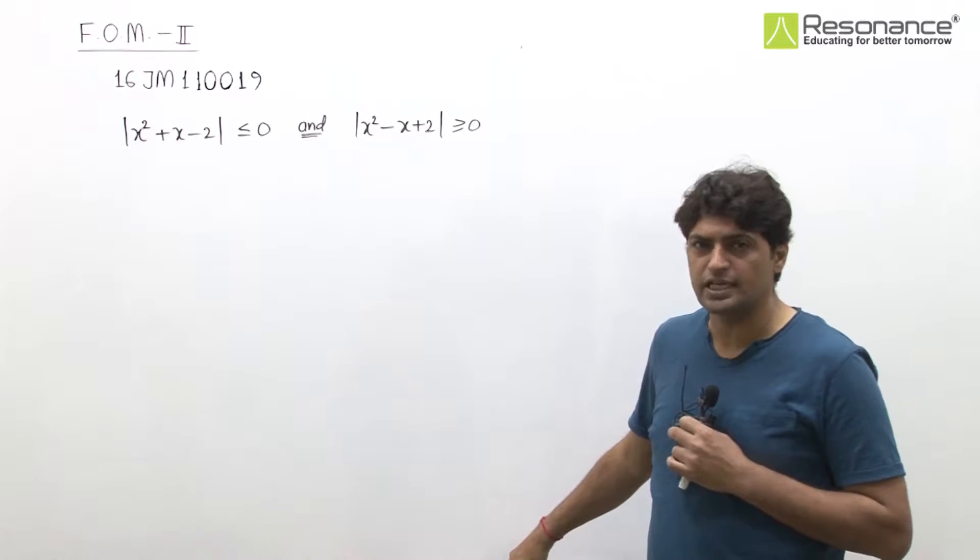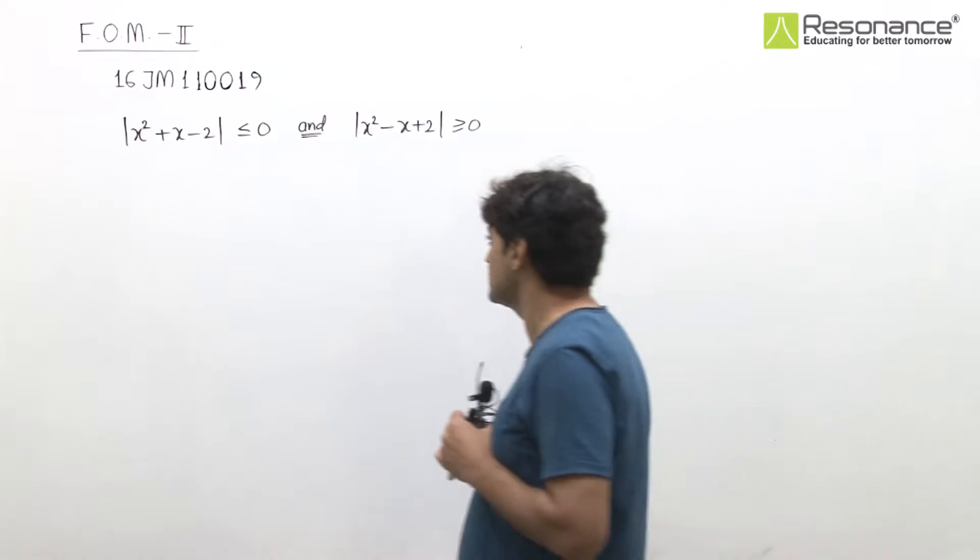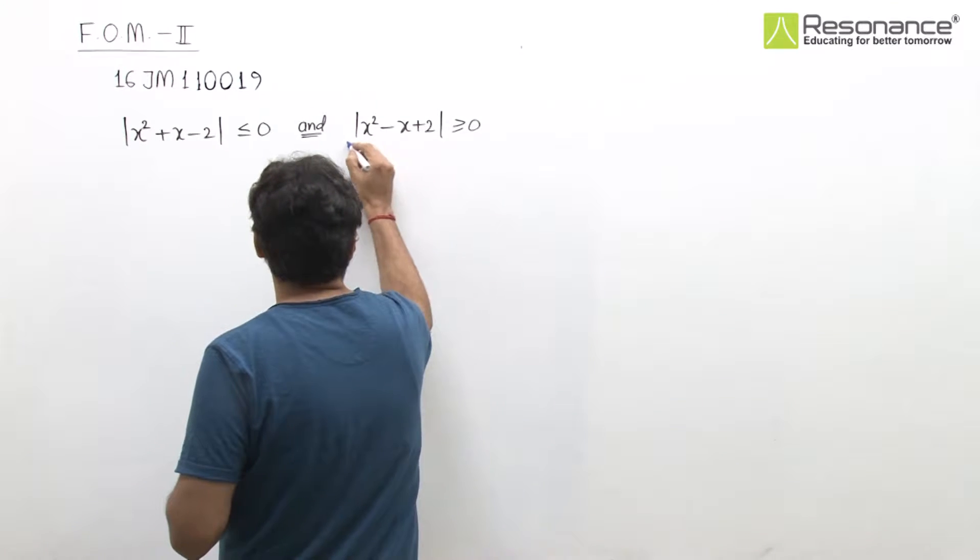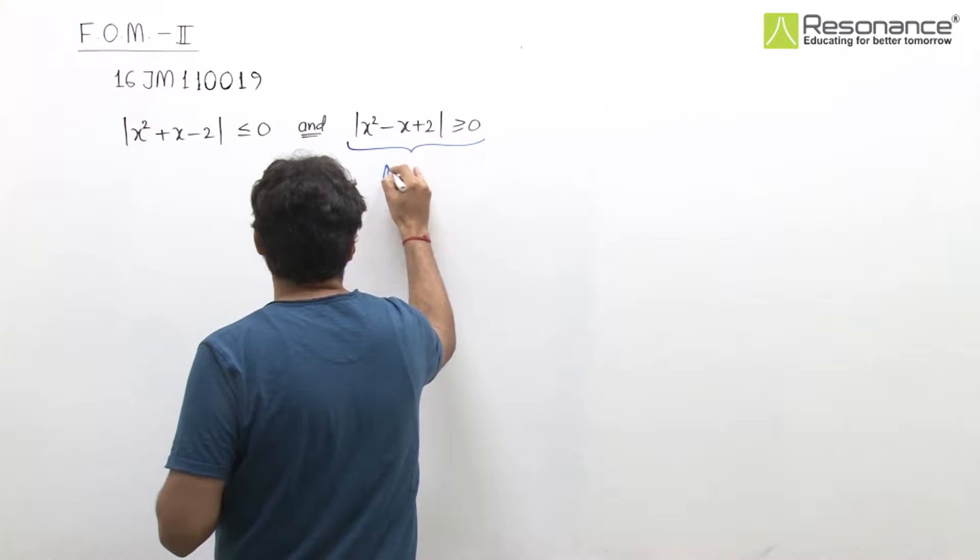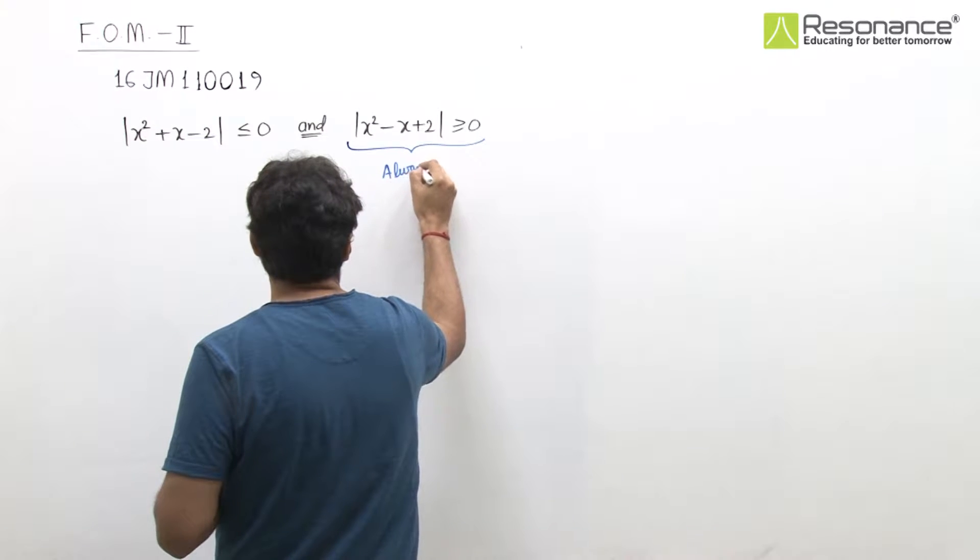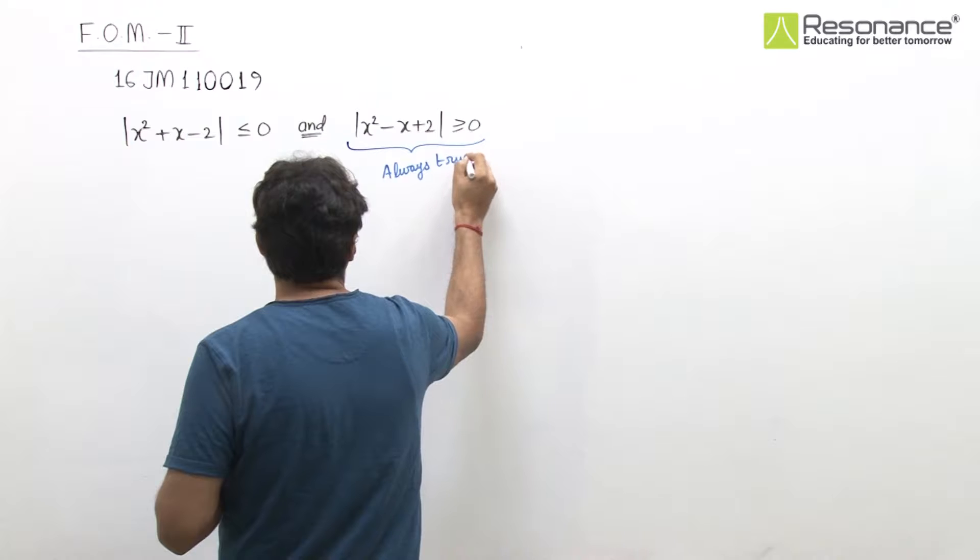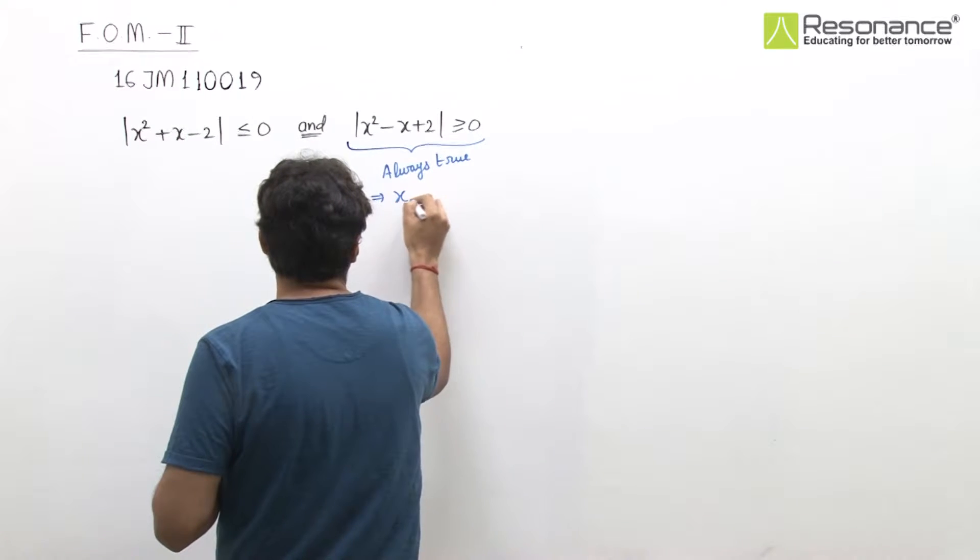We know that modulus ki value hamesha greater or equal to 0 hoti hai, negative pe bhi hoti nahi hai. That means, second one is always true, means x belongs to R.